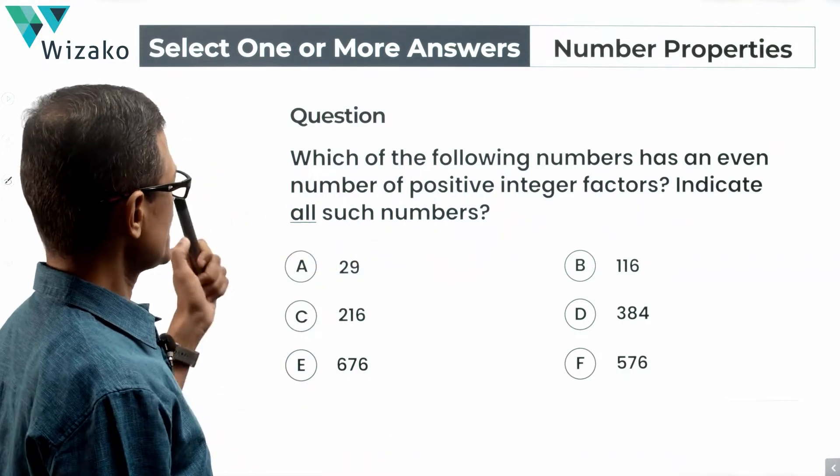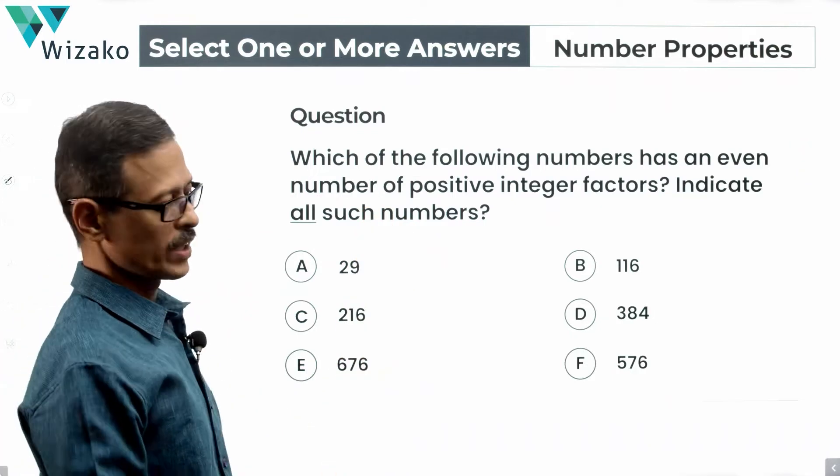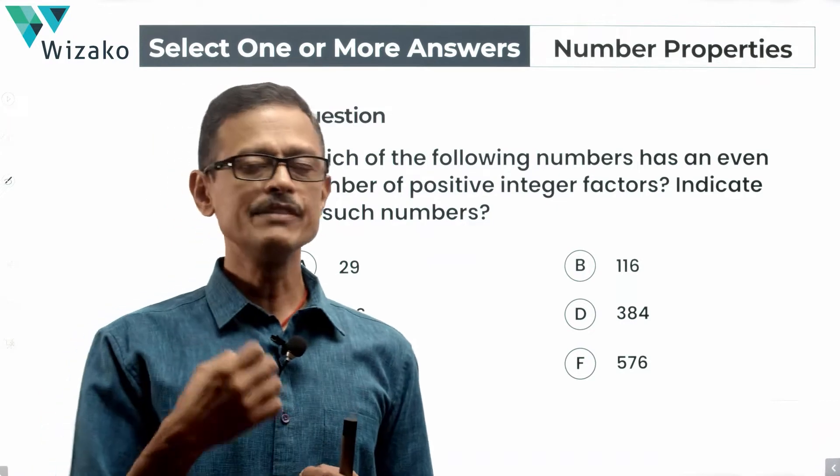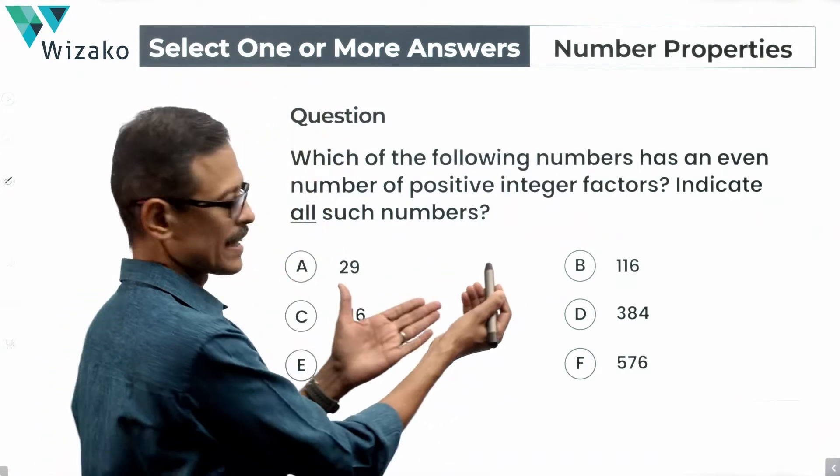Which of the following numbers has an even number of positive integer factors? Indicate all such numbers is what they have said. Given six values, we need to pick which all of these numbers are going to have even number of factors. One way of solving this question is basically listing down the factors of these numbers.